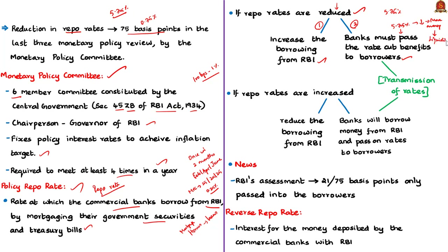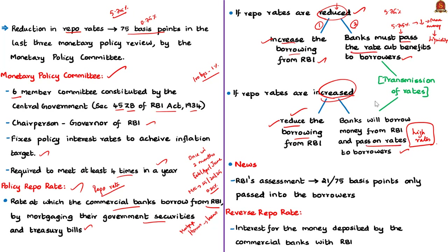When the repo rate is increased, banks either reduce borrowing from the RBI or pass on the higher cost to customers by charging them higher rates. In both scenarios, banks can adjust their borrowing from the RBI or pass on the interest rate changes to their borrowers. This process is known as the transmission of rates.